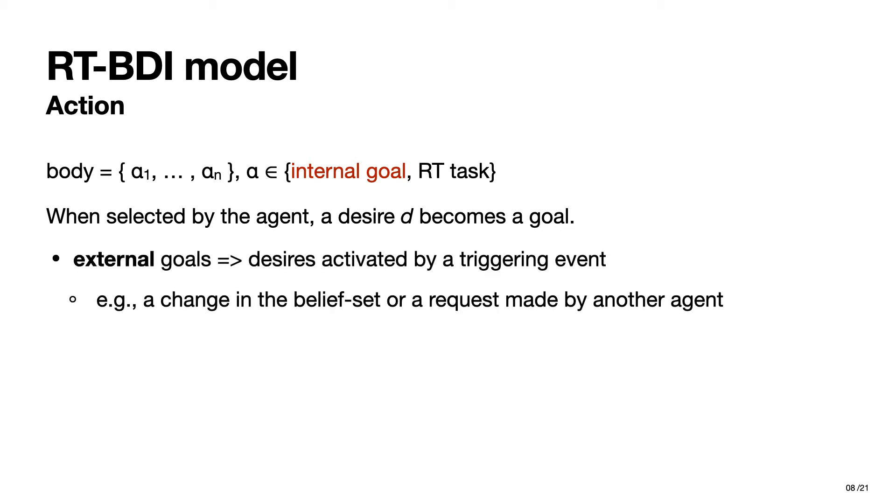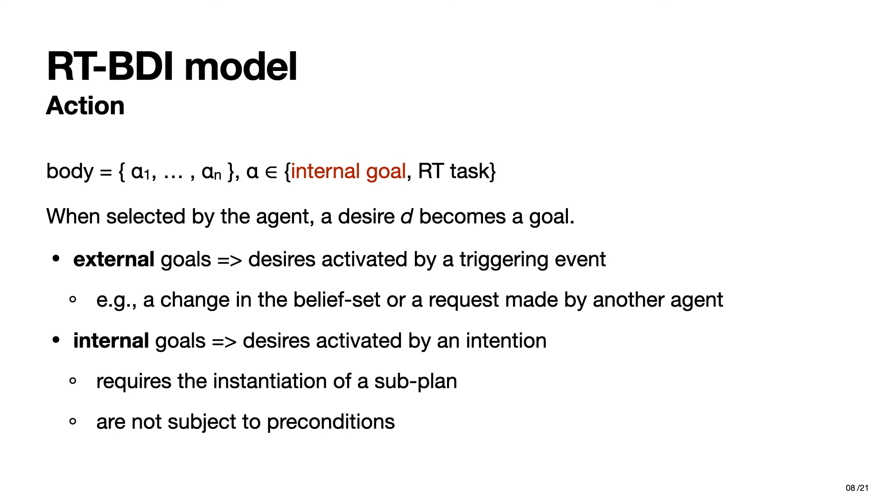When selected by an agent, a desire becomes a goal. So basically, a goal is a desire that the agent is currently committed to achieve. And in RT-BDI, we distinguish between external and internal goals. External goals are desires activated by a triggering event, such as a change in the belief set of the agent, or a request made by another agent, while internal goals are desires activated by a plan during the execution of an intention,